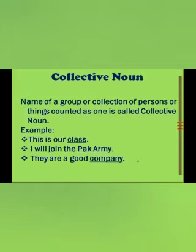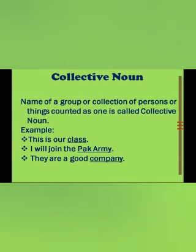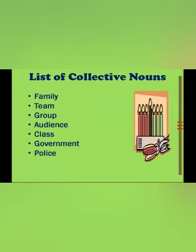The third kind is collective noun, which in Urdu is called ism-e-jama. It is a name that is single but includes many things within it — the name of a group or collection of persons or things counted as one. For example: 'This is our class,' 'Pakistan Army,' and 'They are a good company.' Class, Pakistan Army, and company are collective nouns. Other examples include family, team, audience, government, and police — all contain many people but have one name.